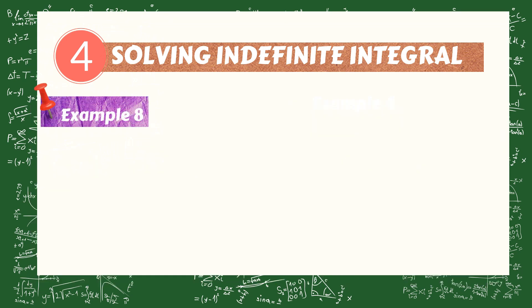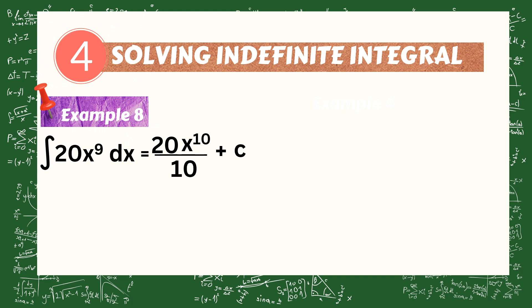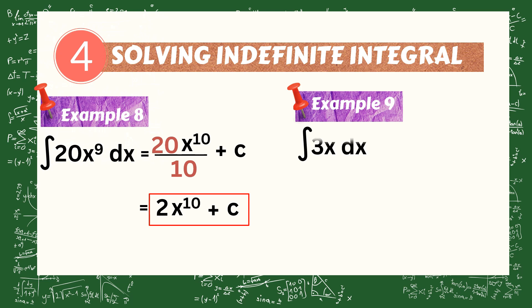Another example: evaluate the integral of 20x to the 9 dx. So 20x raised to the power of 10 over 10 plus C. Then 20 divided by 10 is equal to 2, giving us 2x to the 10 plus C. Another example: evaluate the integral of 3x dx. This is equal to 3x squared over 2 plus C.